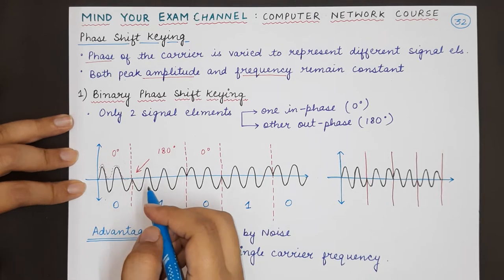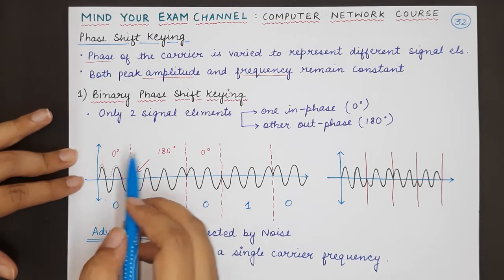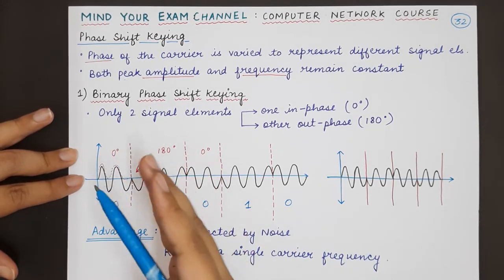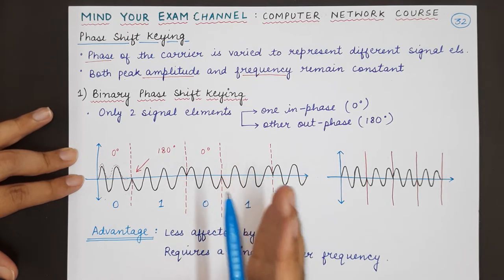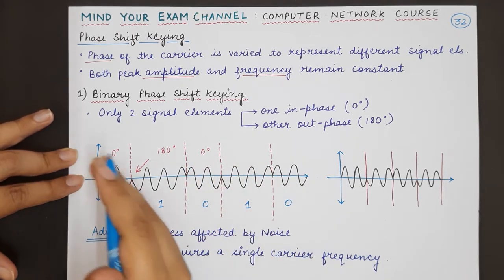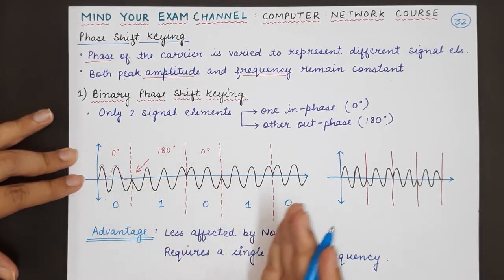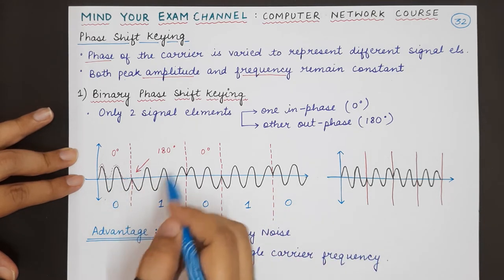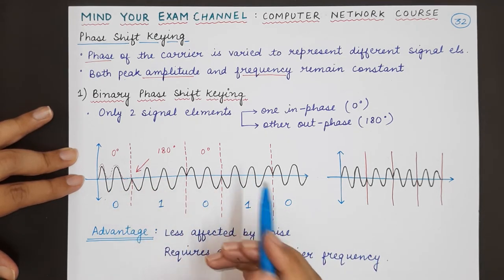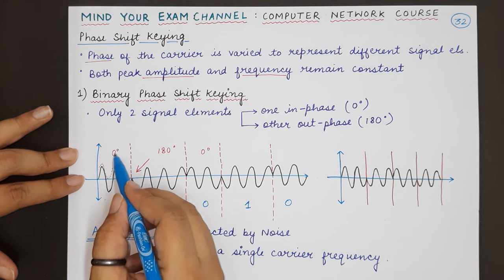Then this will be 1 again and this will be 0. In this case, the phases will be alternating. But if you have a stream of bits in such a way that continuous 0s or continuous 1s are occurring, then the wave will change accordingly.